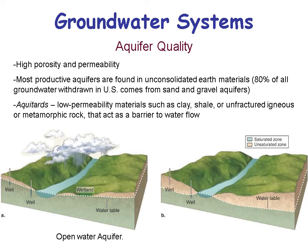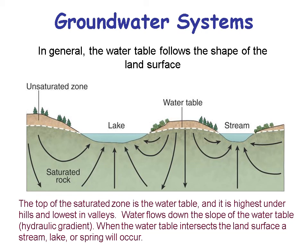Another important term is aquitard — a low-permeability material like shale, clay, unfractured igneous rock or metamorphic rock — through which water doesn't flow; it's a barrier to water flow. In general, the water table follows the shape of the land surface. It's not as steep as the land surface, but generally it follows the shape. If you have a hill, the water table generally rises with the hill, just not as steeply, and then flows into the stream.